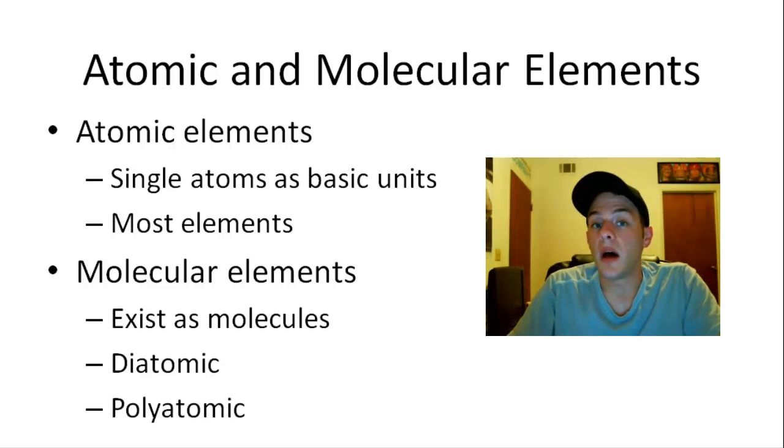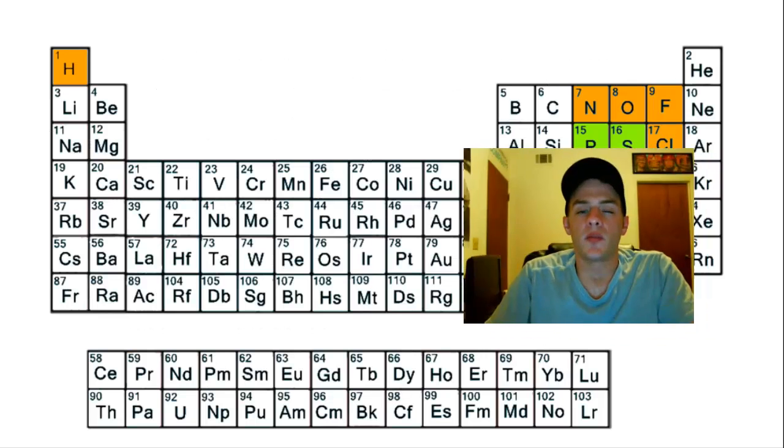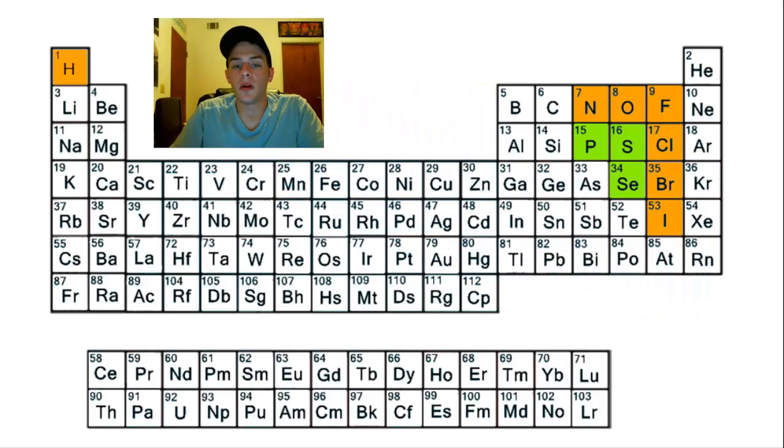And in addition, we also have polyatomic elements, which exist as molecules that contain more than two atoms. So as we look at this periodic table here, well all of the elements that are shaded in white, all of these are atomic elements.